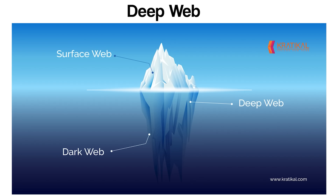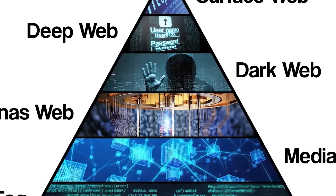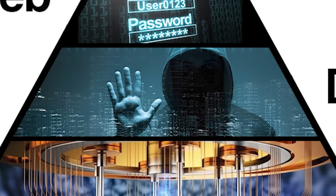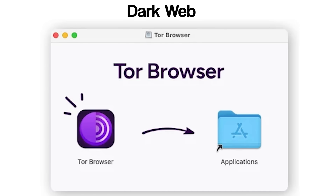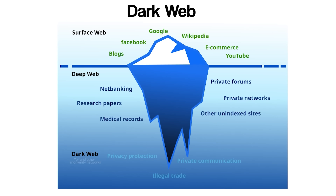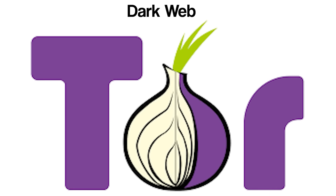The Dark Web is the most concealed and least accessible layer of the Internet. It is intentionally hidden and cannot be accessed through standard browsers or indexed by conventional search engines like Google or Bing. Instead, the Dark Web requires specialized software, most notably Tor, which is designed to anonymize both users and hosts. While the Dark Web is often portrayed in media as a place full of illegal activity, it also serves legitimate purposes, specifically in situations where privacy is important. Websites on the Dark Web use encrypted networks and operate under special domains, typically ending in .onion rather than the standard .com or .org.